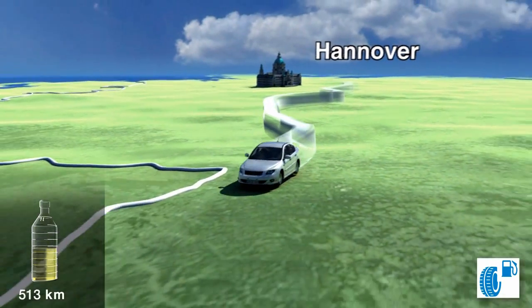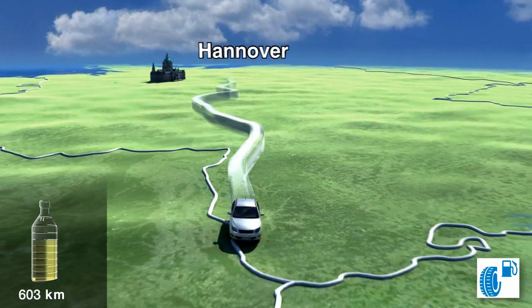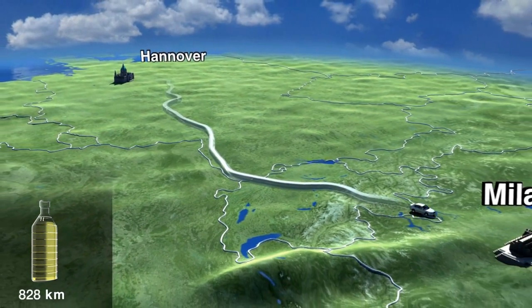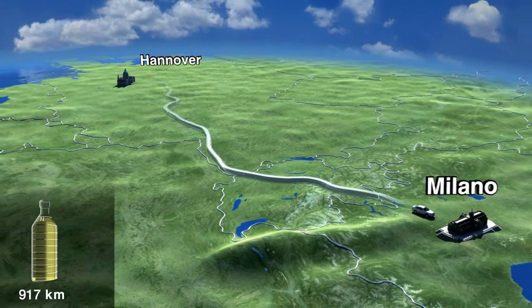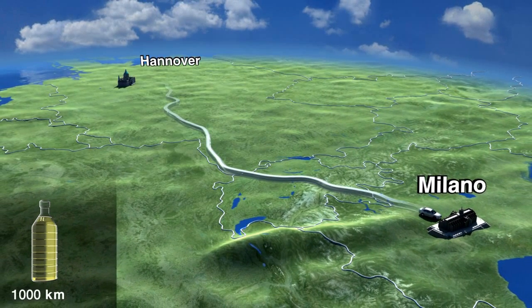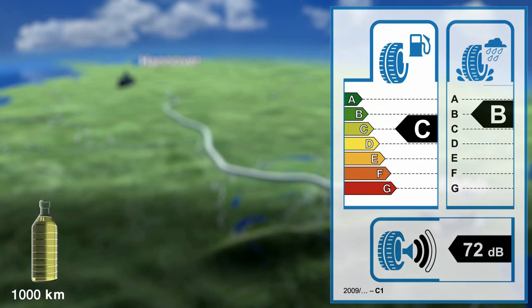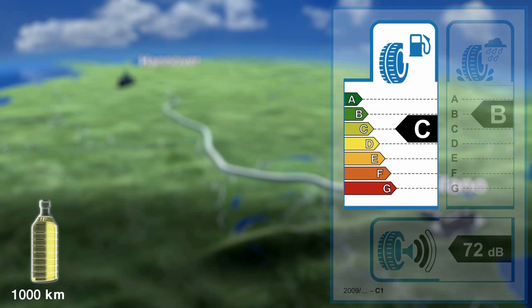Tina travels the length of Germany, then onto the border, through Switzerland and down to northern Italy. The journey ends in Milan after 1,000 kilometres or 625 miles. It's true, the C tyre has now used over 1 litre of fuel more than a tyre from class B, and the calculations can continue in the same way.